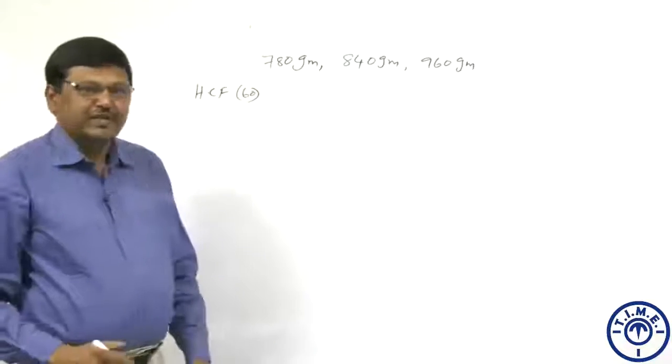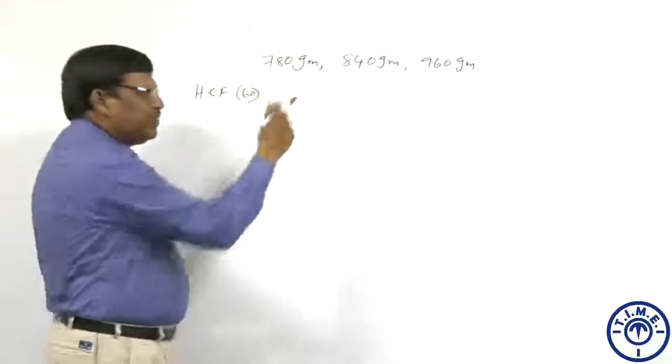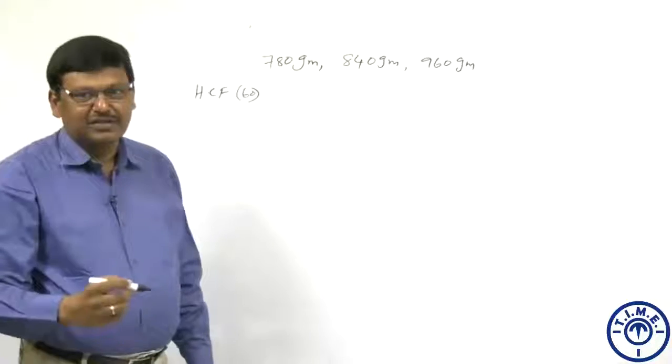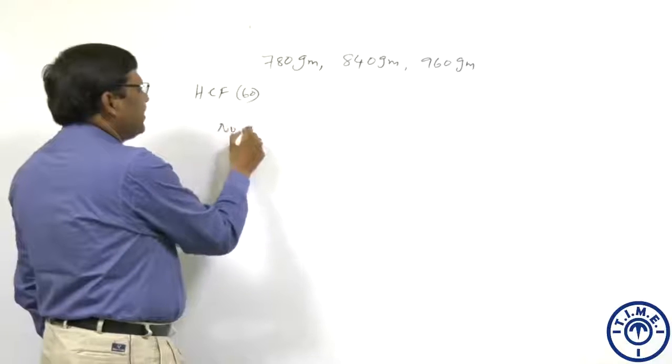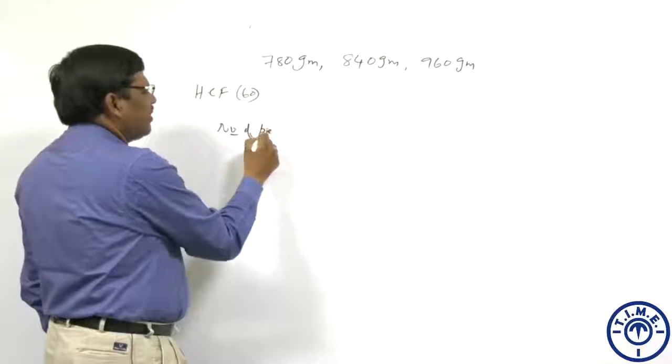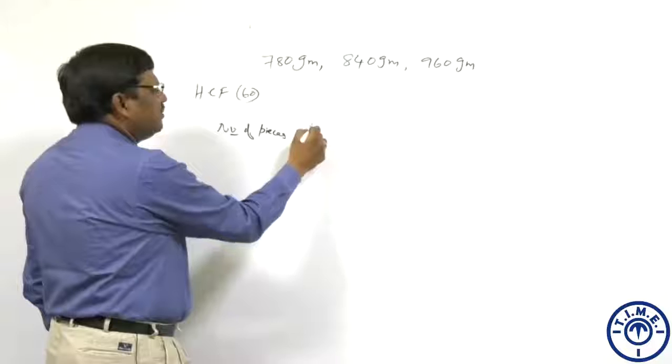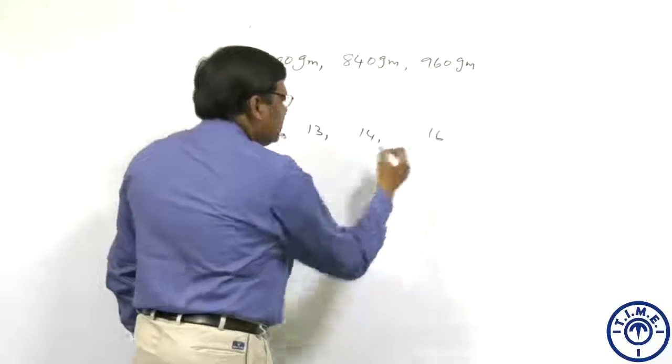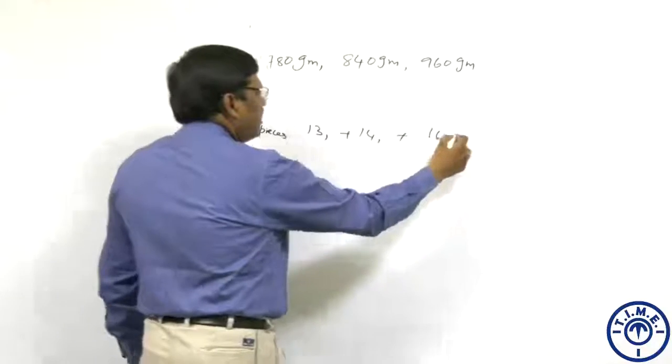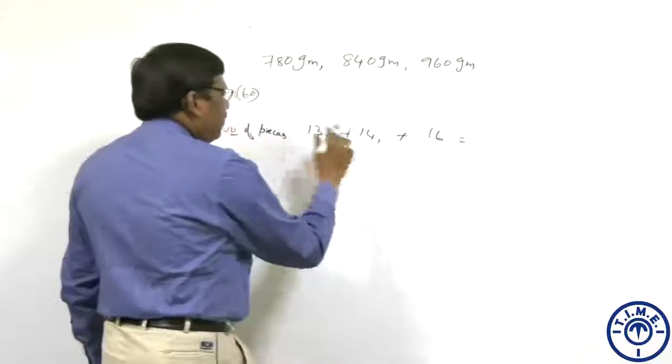If HCF is 60, I can cut them into pieces of 60 grams. If I cut them into pieces of 60 grams, what is the number of pieces I can get here? Number of pieces will be 13 pieces here, 14 pieces here, 16 pieces. Total, you will have 43 pieces.